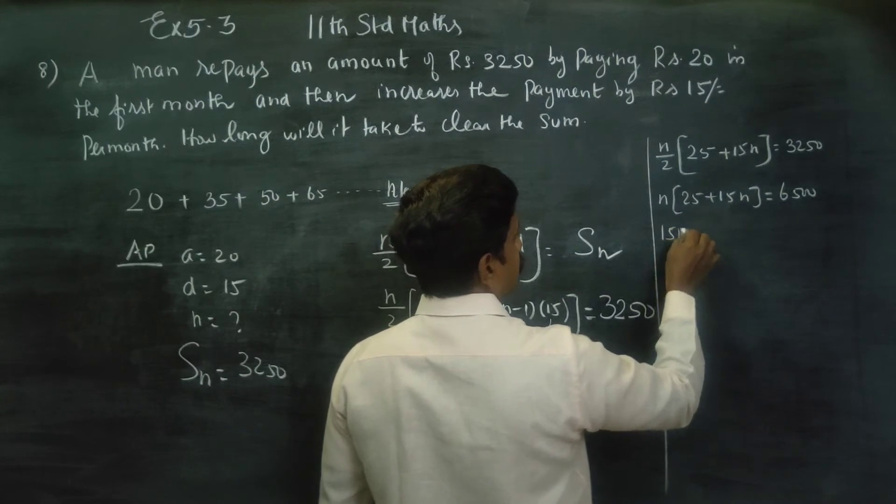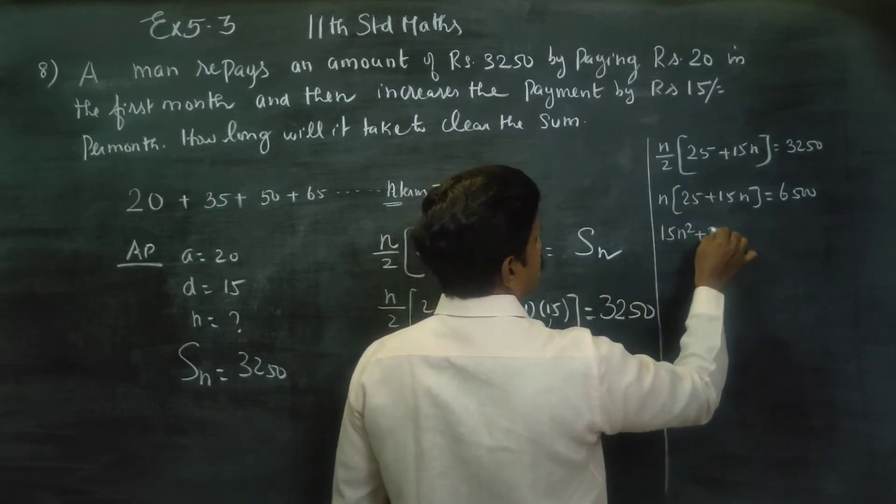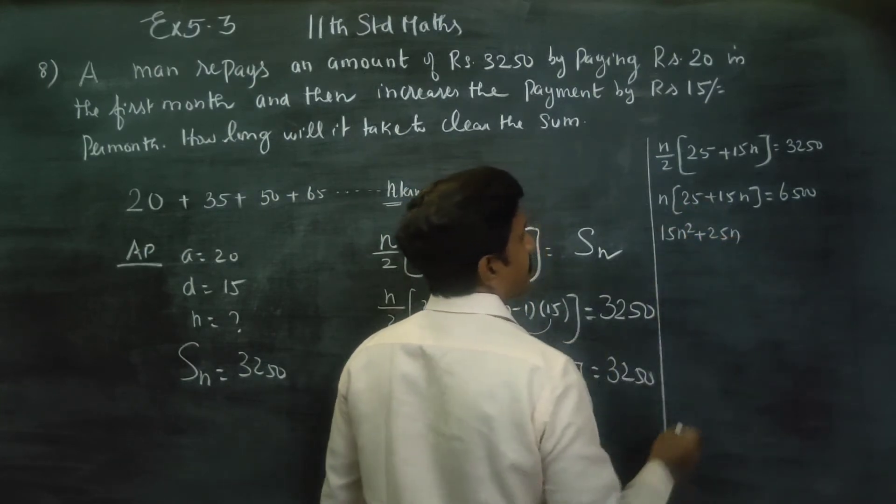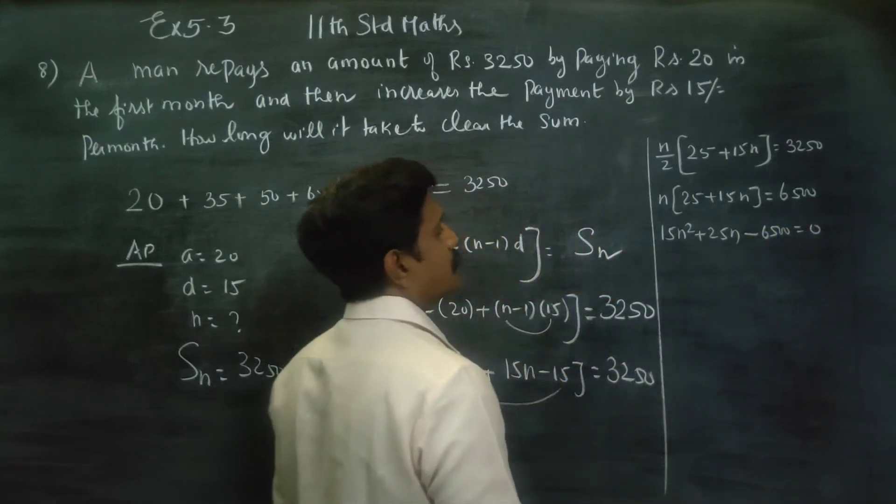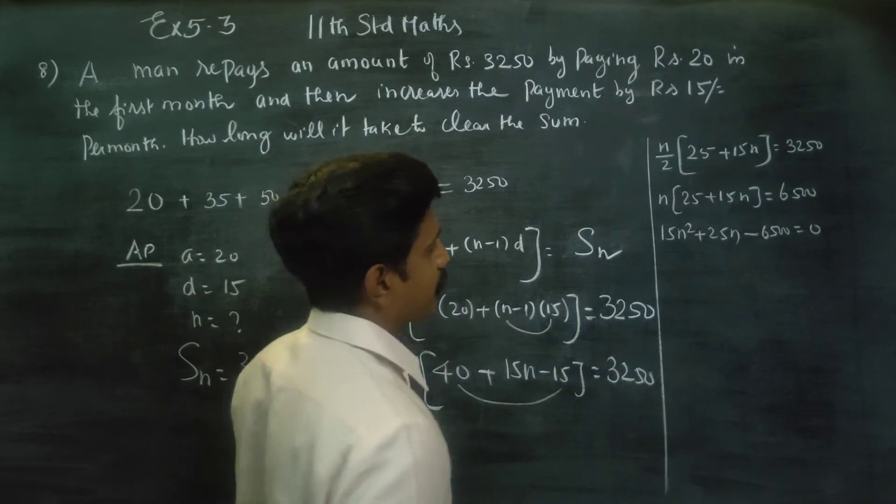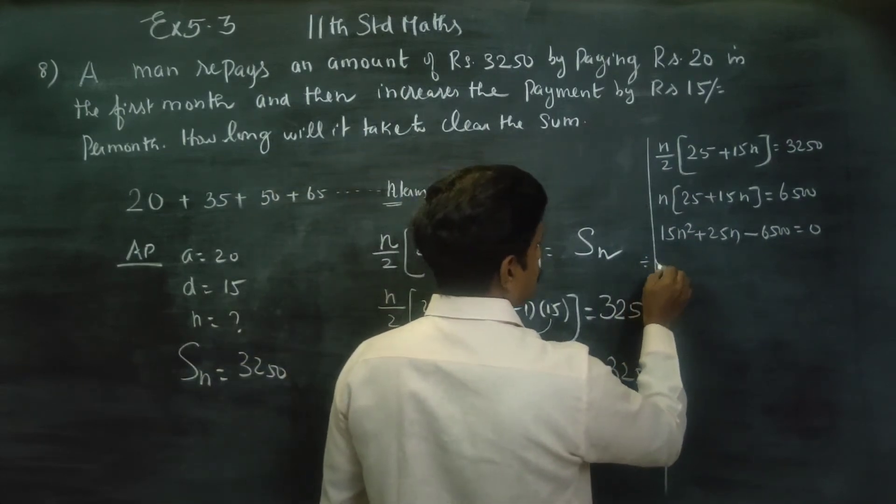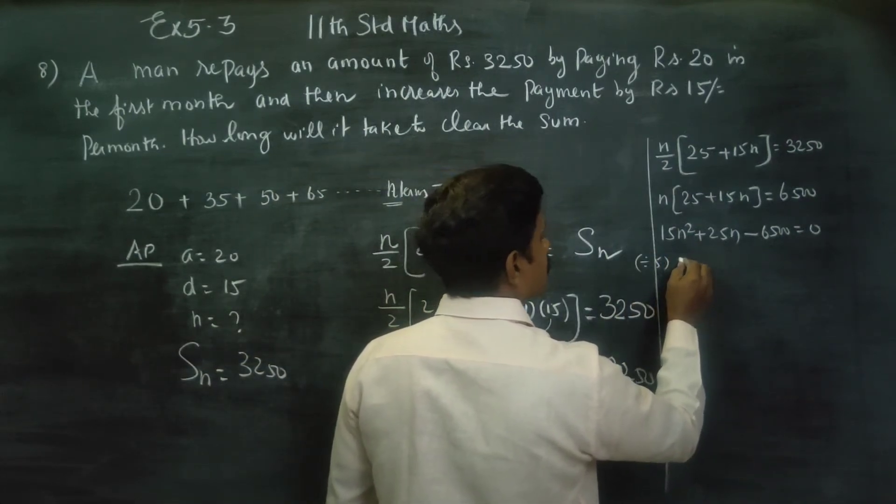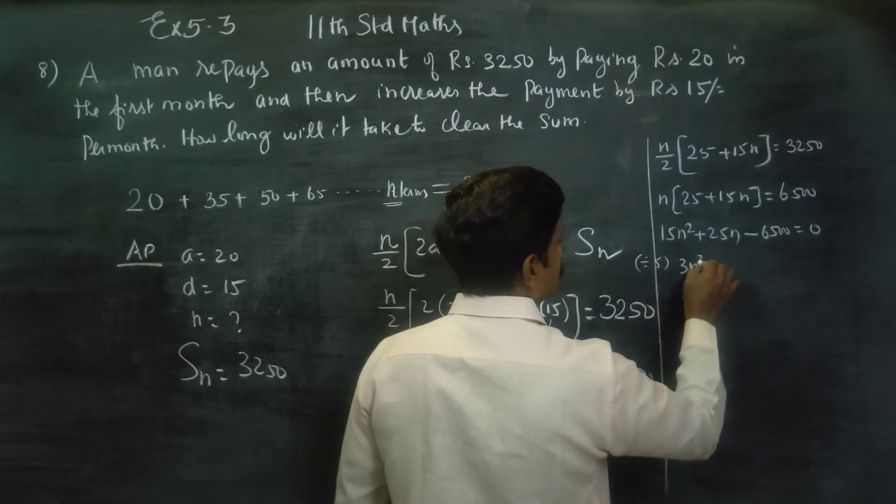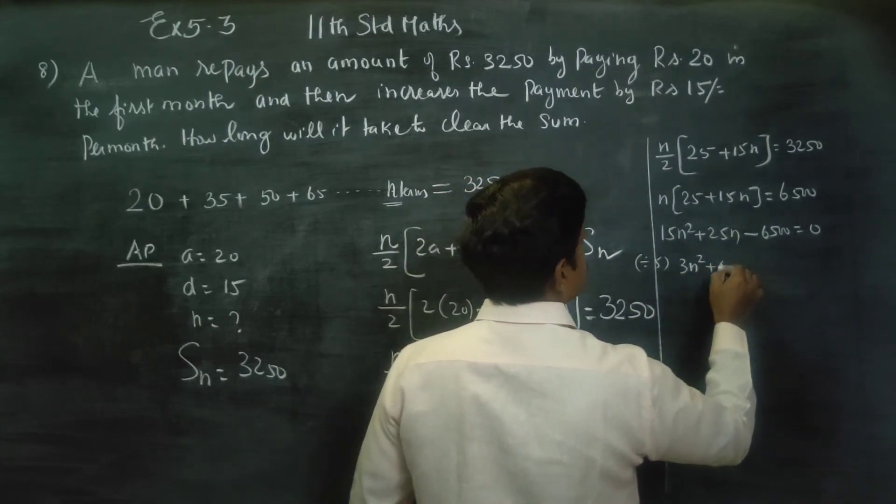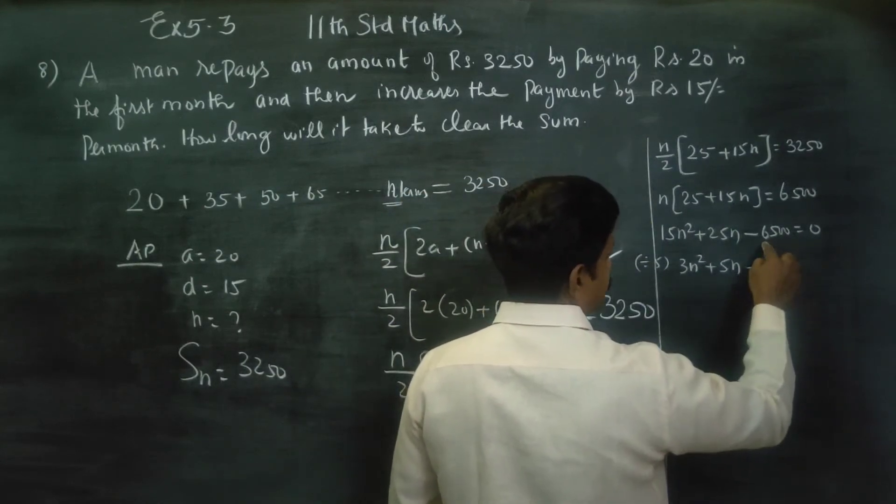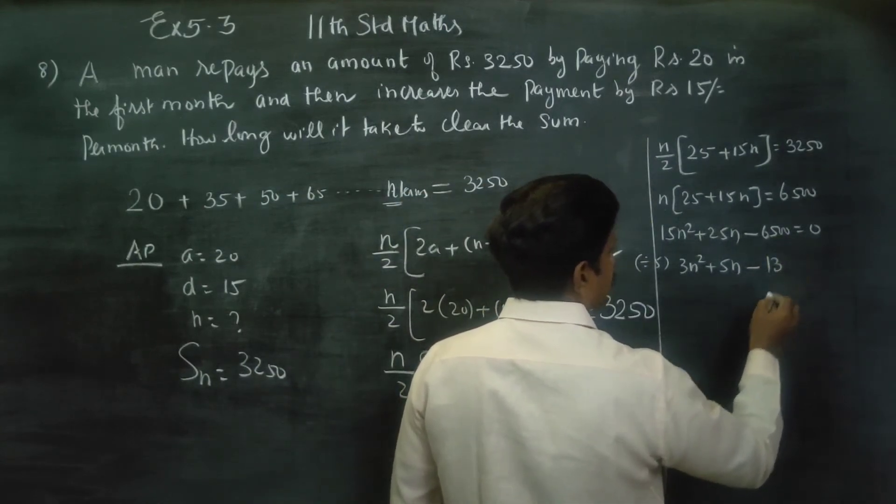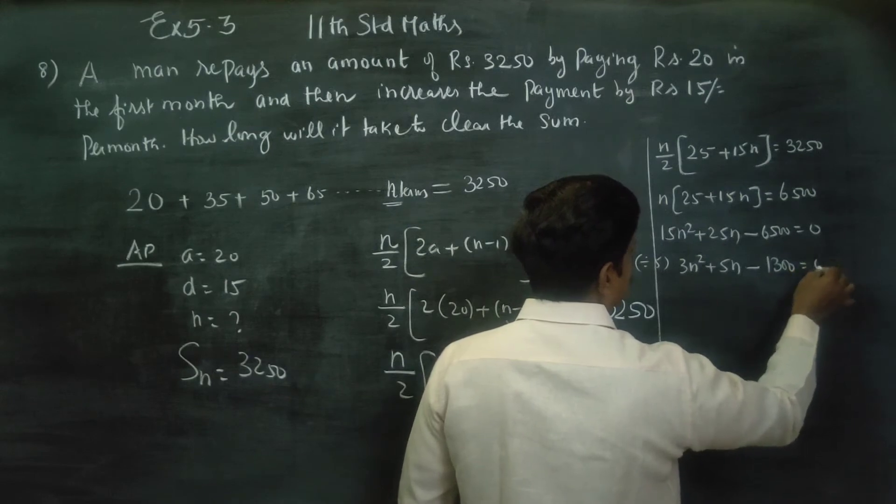15n squared plus 25n minus 6500 equals 0. If you want, you can divide by 5. Dividing by 5, you get 3n squared plus 5n minus 1300 equals 0.